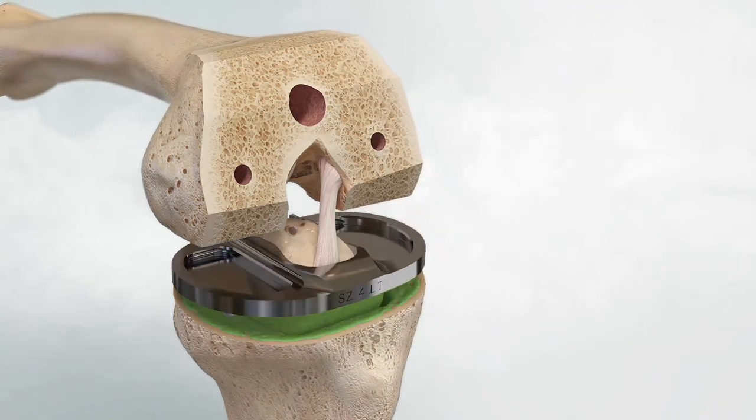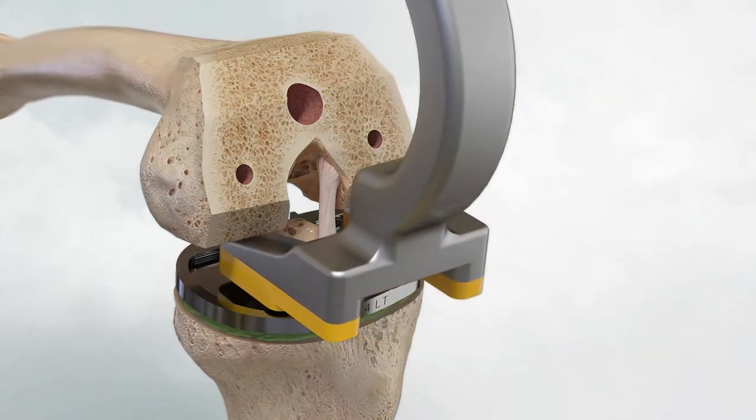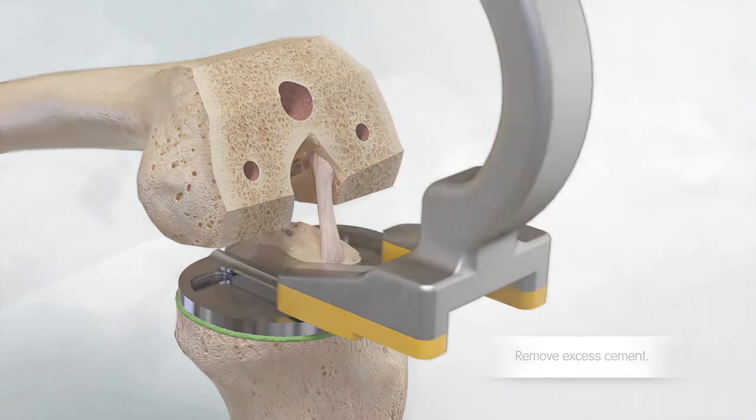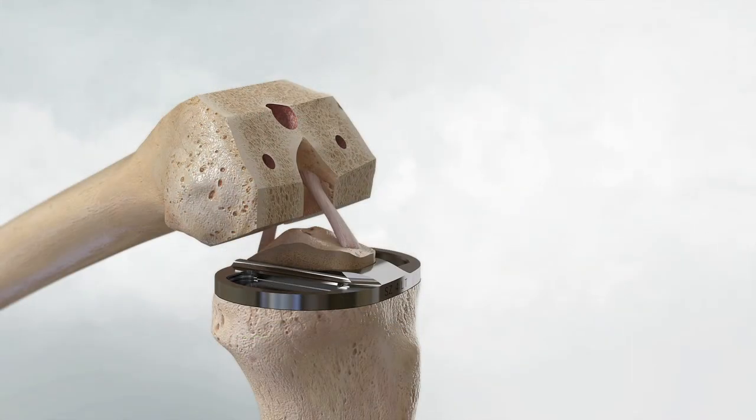Use the tibial implant impactor and a mallet to fully seat the tibial baseplate component onto the proximal tibia. Clear any debris from the locking mechanisms.